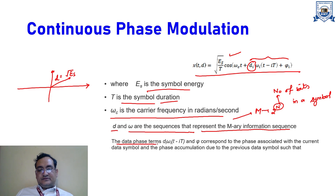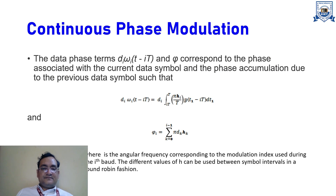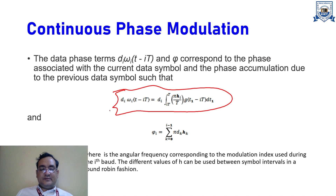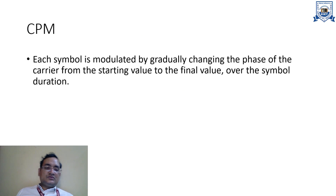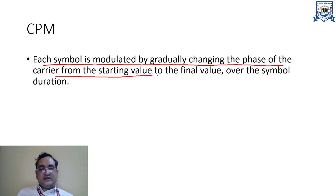The data phase term d_i is the i-th symbol, omega_i is the i-th frequency component, and phi corresponds to the phase associated with the current data symbol plus the phase accumulation due to all previous data symbols. Here omega_i is the angular frequency corresponding to the modulation index used during the i-th slot. Different values of h, the modulation index, can be used between symbol intervals in a round-robin fashion. In CPM, each symbol is modulated by gradually changing the phase of the carrier from the starting value to the final value over the symbol duration.